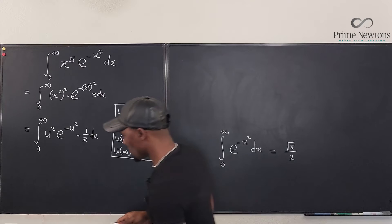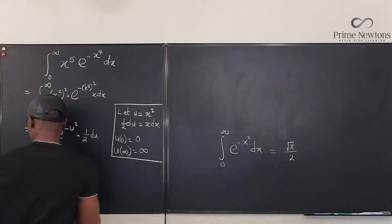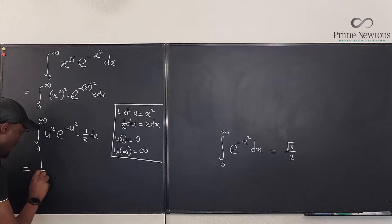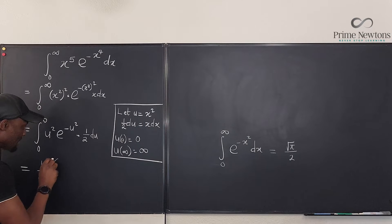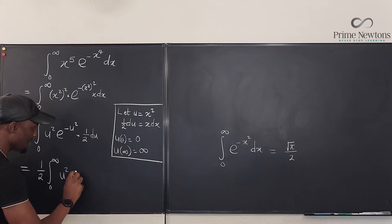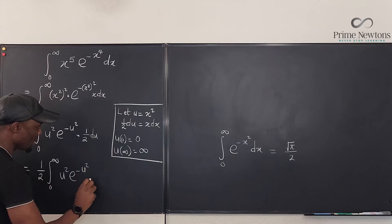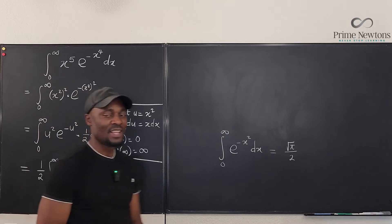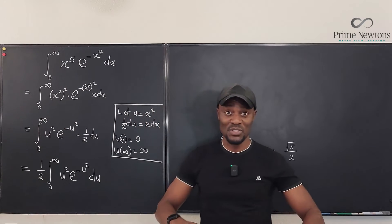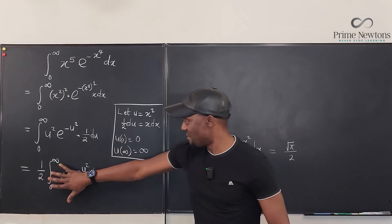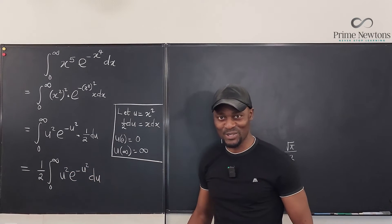The result of the first transformation is one-half times the integral from 0 to infinity of u squared e to the negative u squared du. Now it's as if we're starting afresh with this new integral.